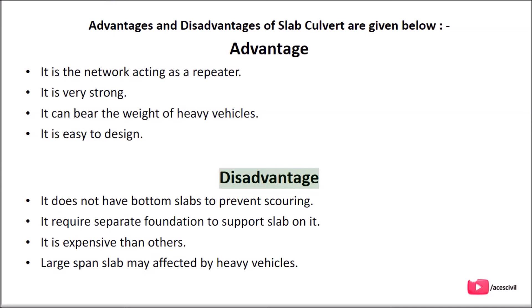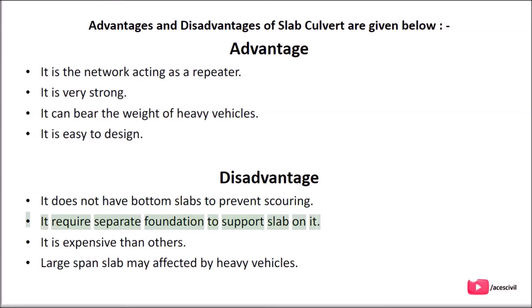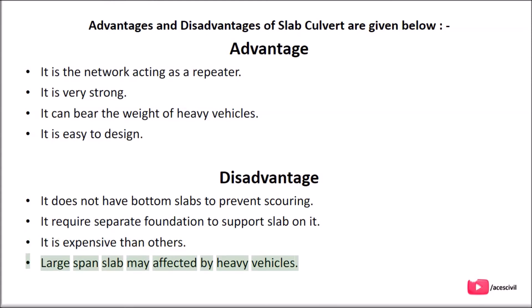Disadvantages of slab culvert: It does not have bottom slabs to prevent scouring. It requires a separate foundation to support the slab. It is more expensive than other types. Large span slabs may be affected by heavy vehicles.